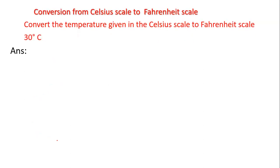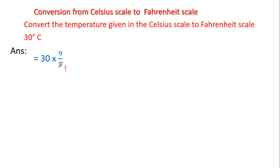Let's take one more problem. Here the given temperature is 30 degrees Celsius. To convert 30 degrees Celsius into Fahrenheit, we multiply the given degree with 9/5 and find the product of these two numbers.